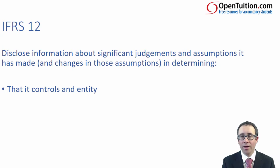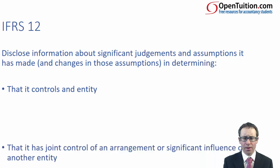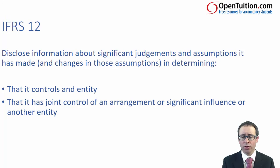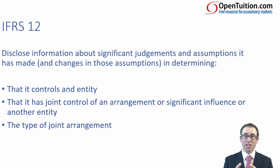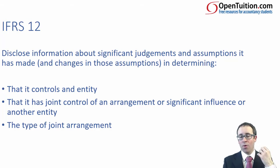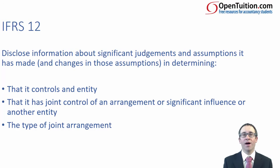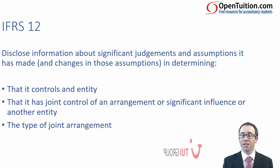IFRS 12 requires you to disclose information about significant judgments and assumptions made, and any changes in determining that you control an entity — so why do you have a subsidiary and what has led you to treating it as such? Why you have joint control, or why you have significant influence over another entity. When looking at joint arrangements, you disclose information about the type, and the standard further requires explaining why and how you've consolidated it, why it's an associate or joint venture and how you've accounted for it. It also requires additional disclosures about material joint ventures and material associates to help judge the risks associated with them.